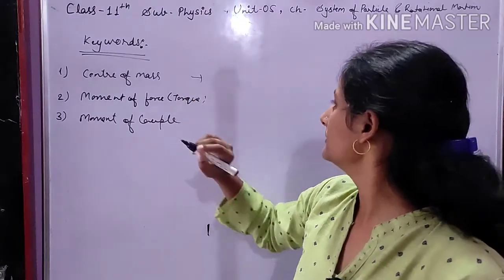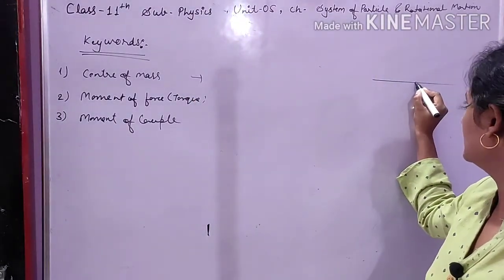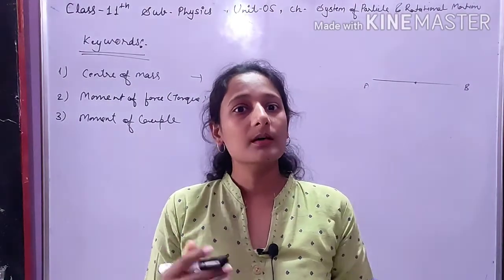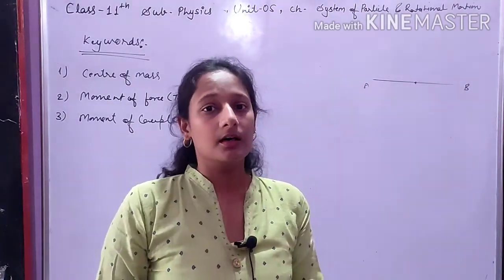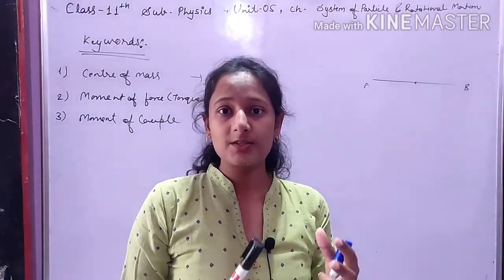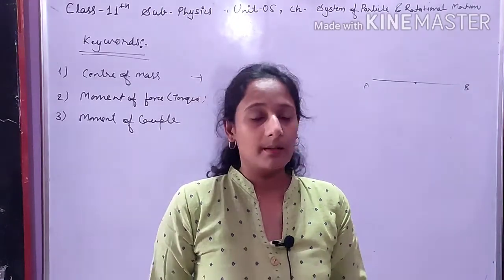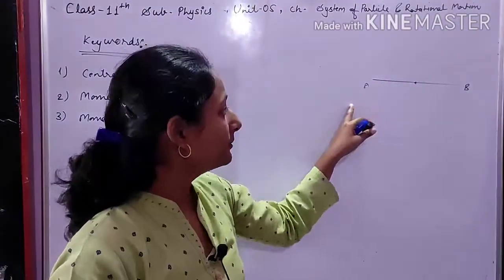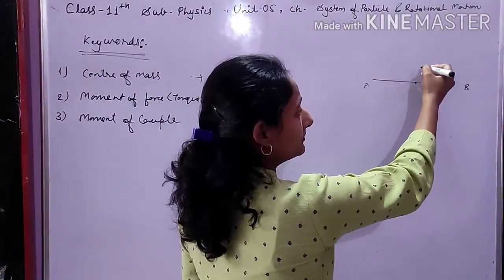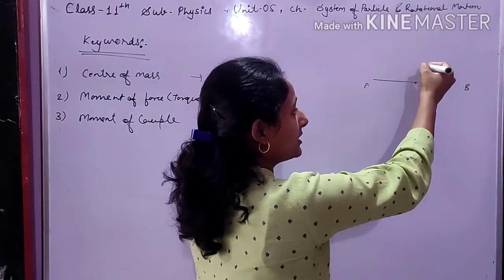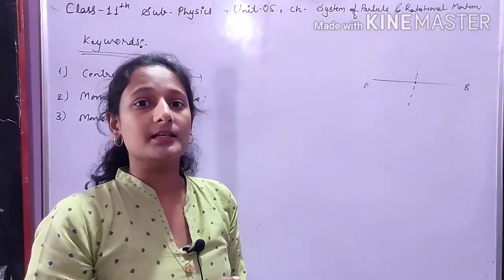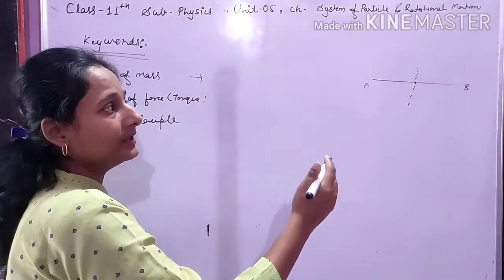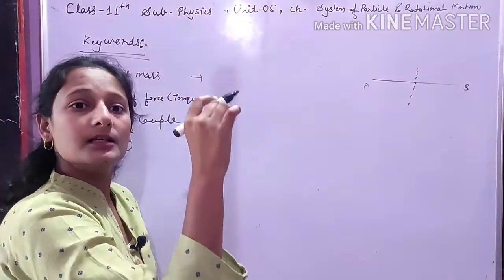Center of mass — this is a body, and this is the center point of that body AB. Center of mass of a body is that point where the entire mass of that body can be supposed to be concentrated. So if we have a body AB, it has a point where the entire mass is concentrated — that point is the center of mass of that body.